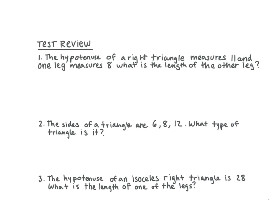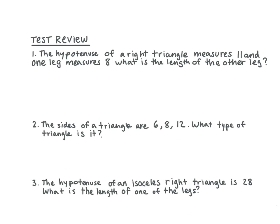Let's take a look at number one. The hypotenuse of a right triangle measures 11 and one leg measures 8. What is the length of the other leg? We should draw it out first. So we have the hypotenuse is 11 and one leg is 8. What can we say the other leg is? X.